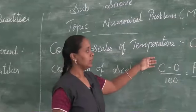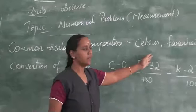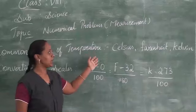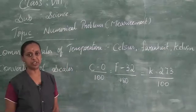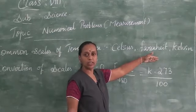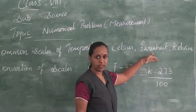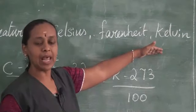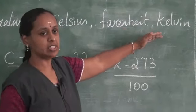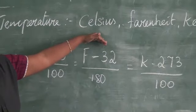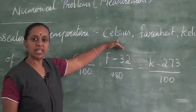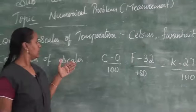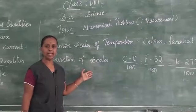The common scales to measure temperature are Celsius, Fahrenheit, and Kelvin. For body temperature, doctors measure using the Fahrenheit scale. The Kelvin scale is used in large industries or laboratories to calculate high temperatures. Celsius is commonly used in normal calculations like weather calculations.